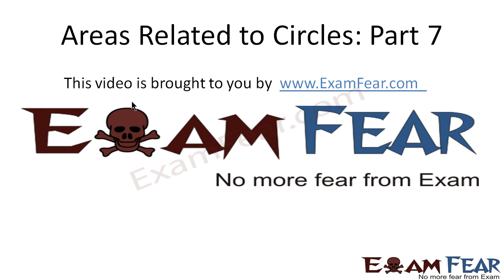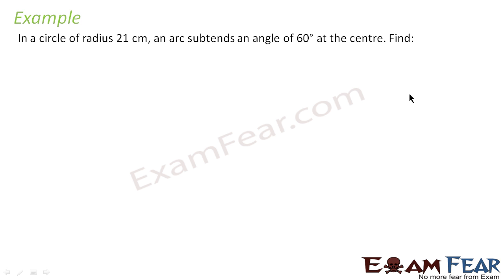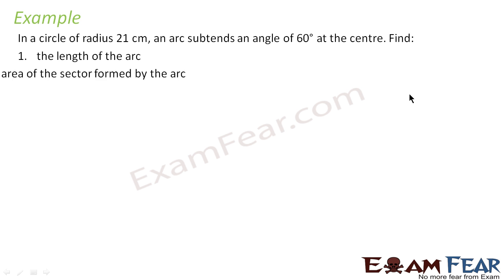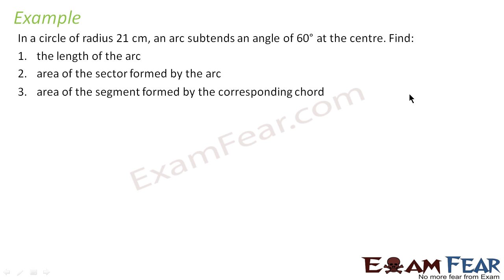This video on areas related to circles, Part 7, is brought to you by ExamFear.com. Before watching this video, please make sure that you have watched Parts 1 to 6. Let's take an example: in a circle of radius 21 centimeters, an arc subtends 60 degrees. We need to find the length of the arc, the angle formed by the arc, and the area of the segment.